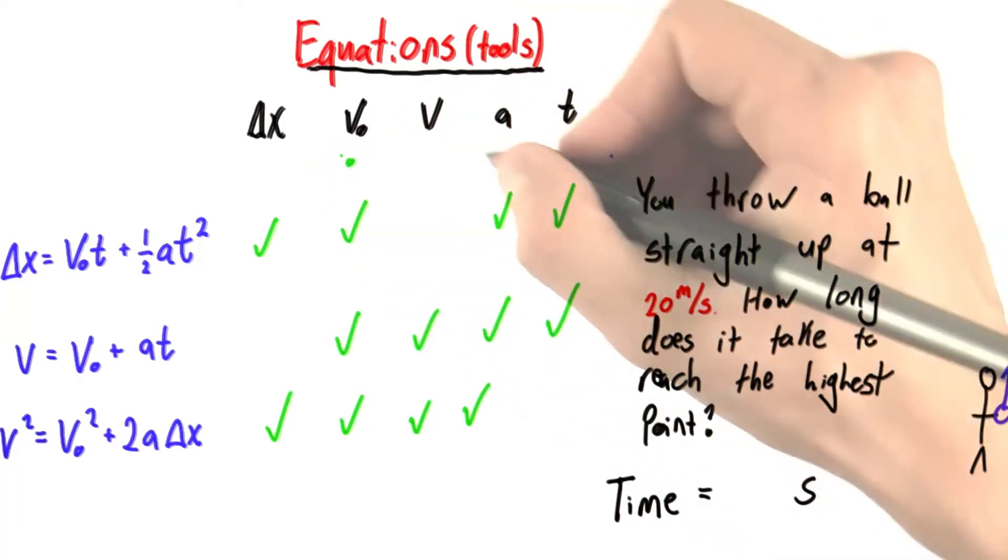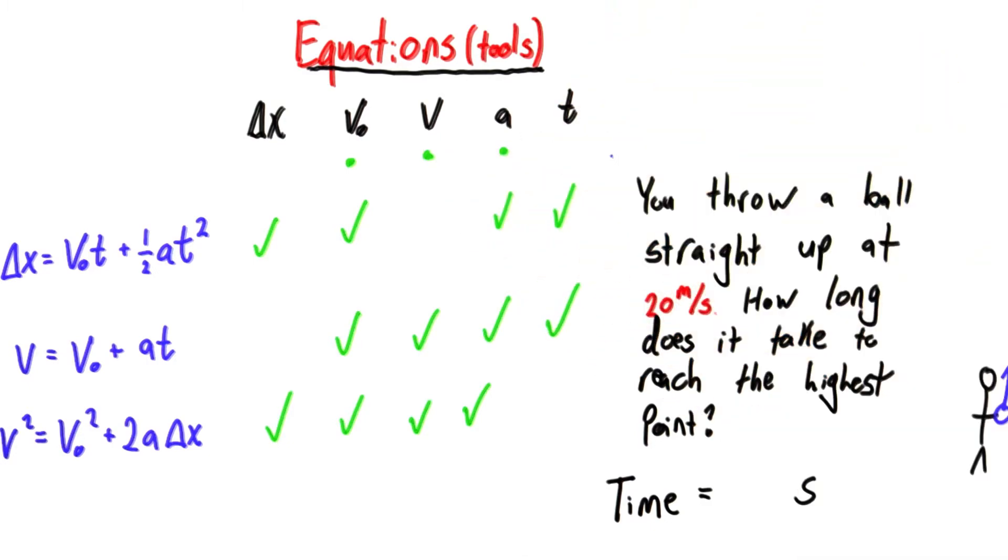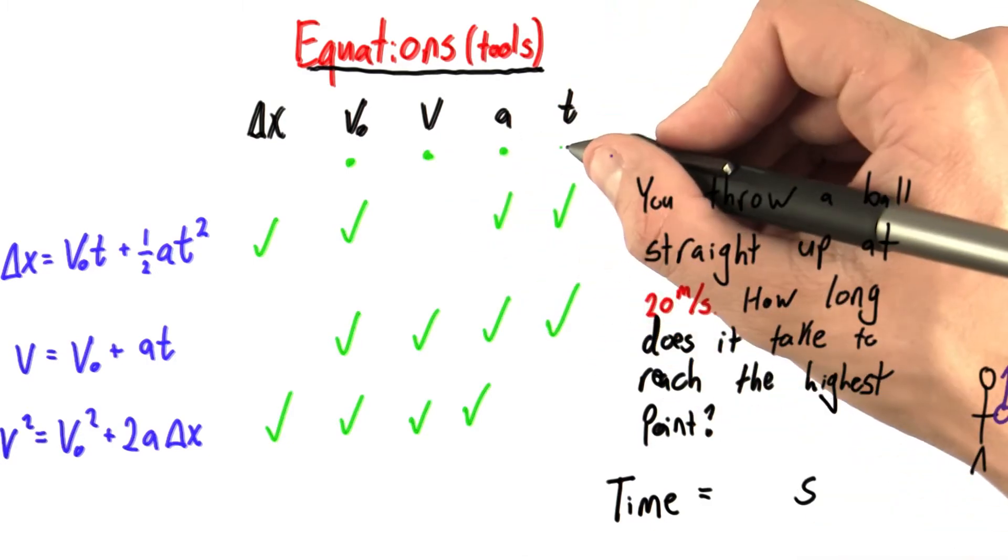Well, let's see, we know initial velocity. We know acceleration since we're on the earth. We can use the same trick to know the velocity at the top of the trajectory is 0, and we're looking for the time.